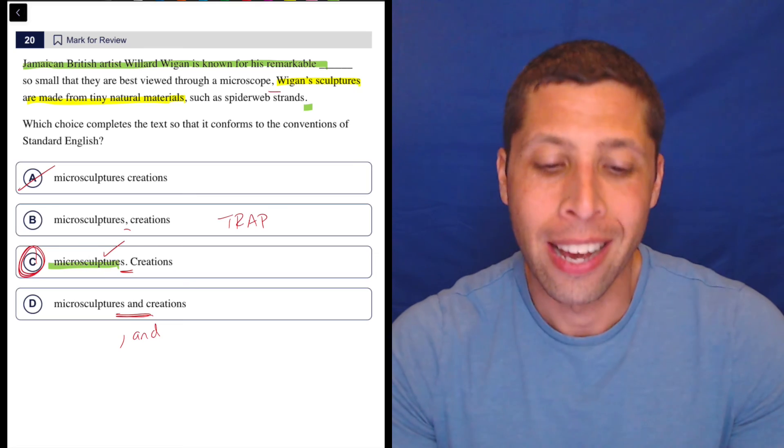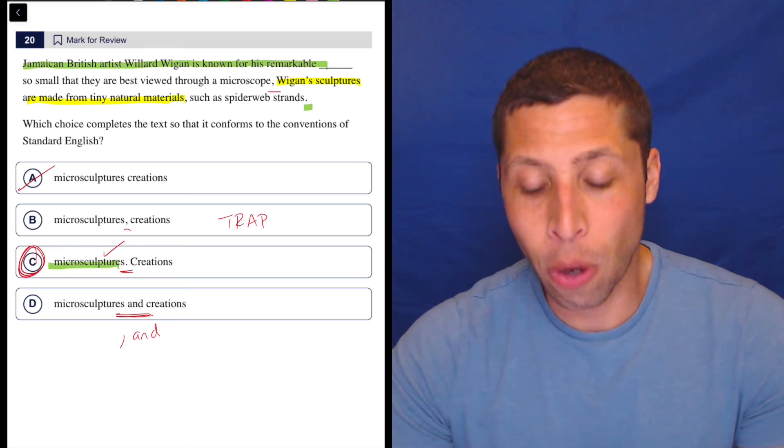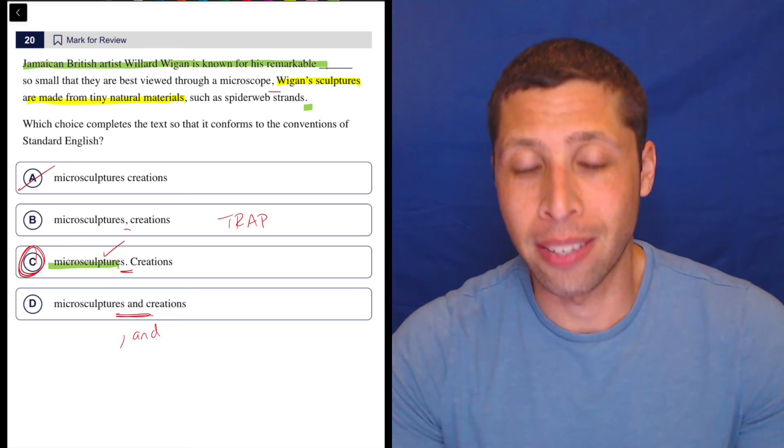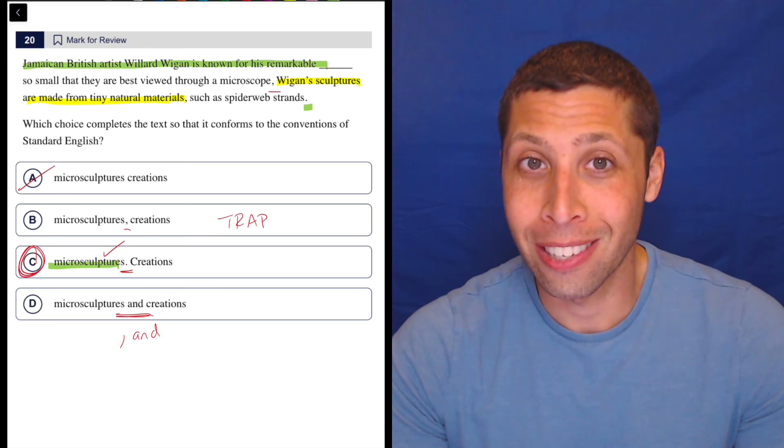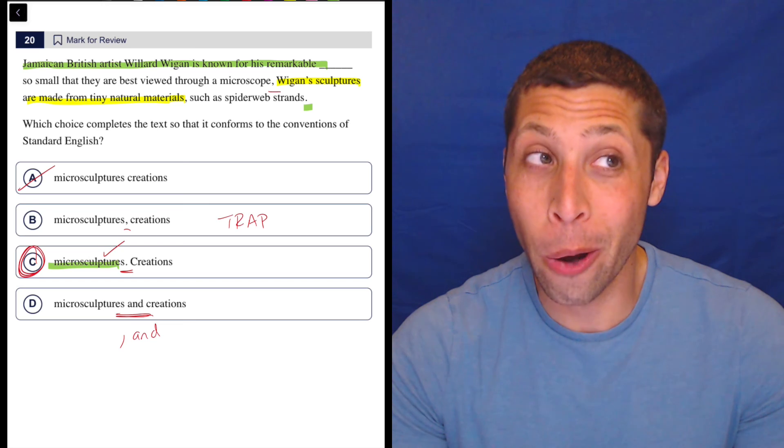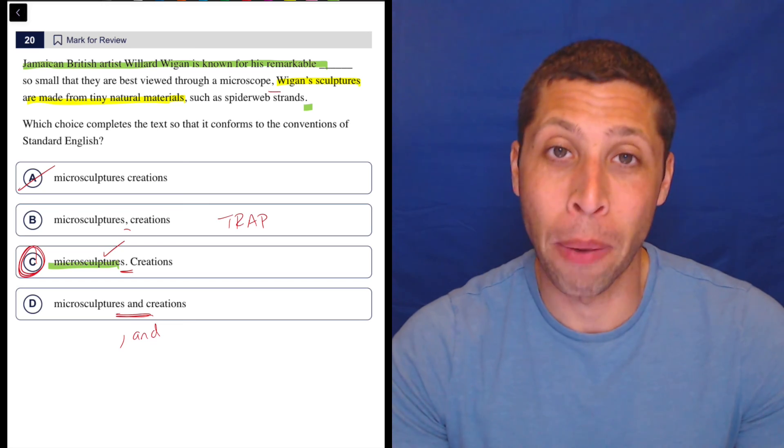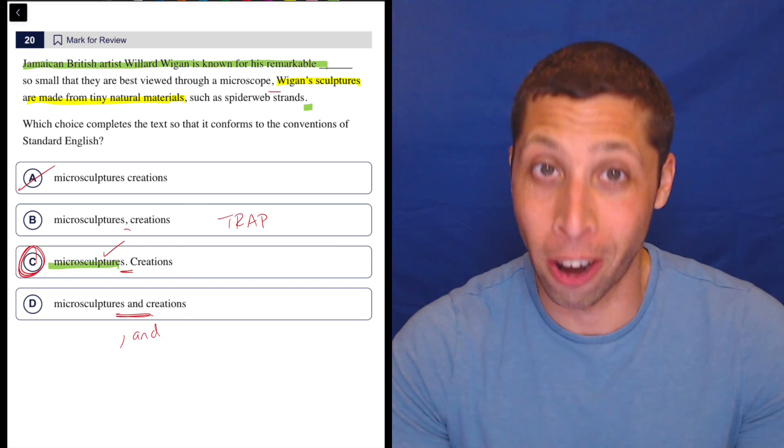So we got another rule for and a conjunction. So a lot of things going on here, but this is a trap the SAT loves to set. So be prepared. They're going to do this. So know the rules and know to read everything when punctuation and sentence structure are on the line.